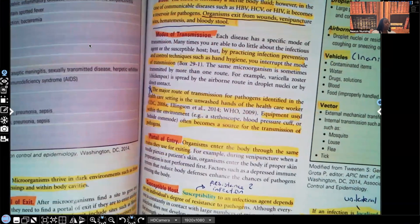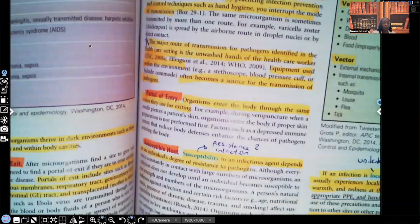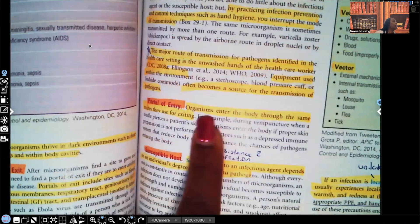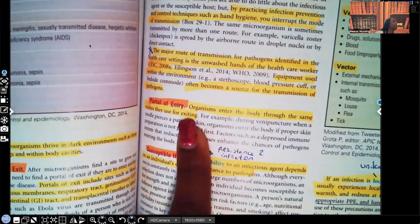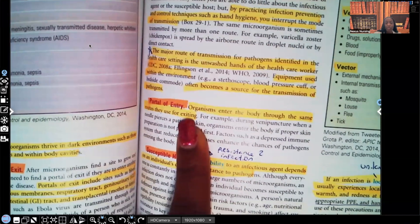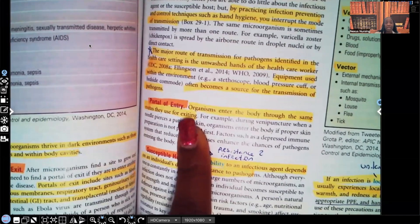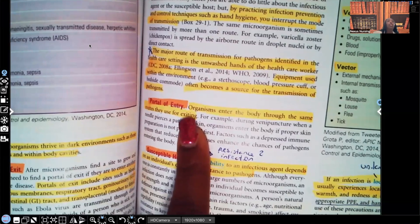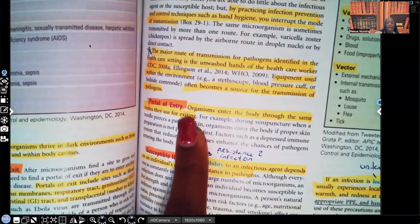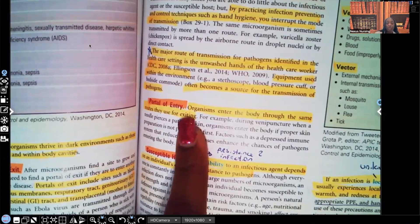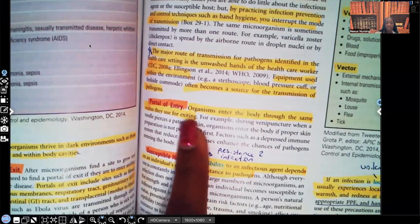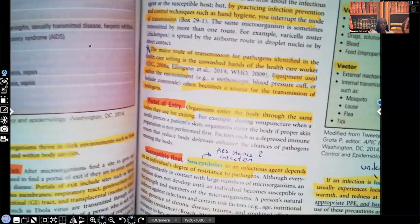Portal of entry. Organisms enter the body through the same routes they use for exiting. So remember how we talked about exiting through the skin? Guess what? How they enter through a break in the skin as well. So the same routes for entering the body is the same they use for exiting. Susceptible host. Let's talk about this.